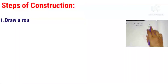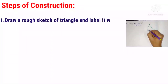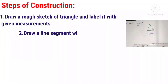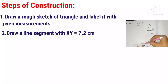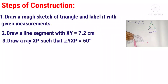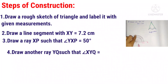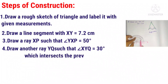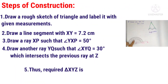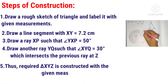Steps of construction: First, draw a rough sketch of the triangle and label it with the given measurements. Second, draw line segment PQ equals 7 centimeters. Third, draw ray PX such that angle QPX equals 60 degrees. Fourth, draw another ray QY such that angle PQY equals 60 degrees, which intersects the previous ray at R. Thus, the required triangle PQR is constructed with the given measurements.